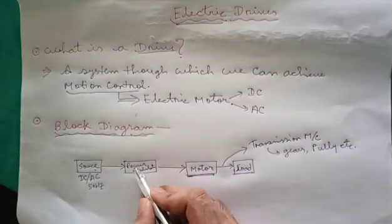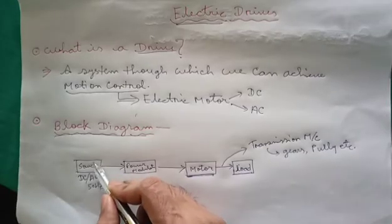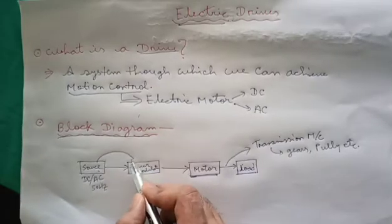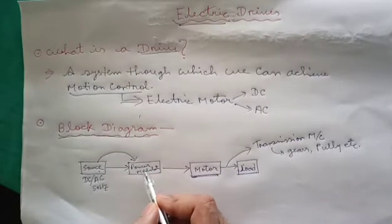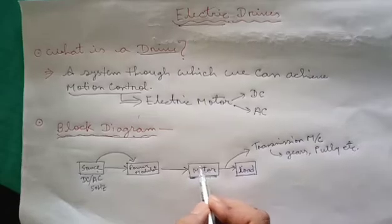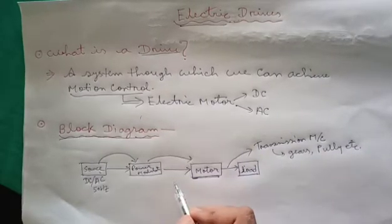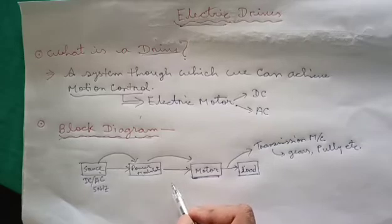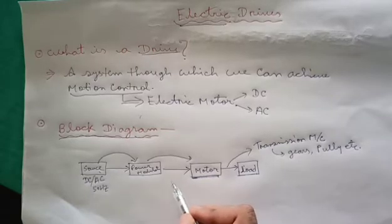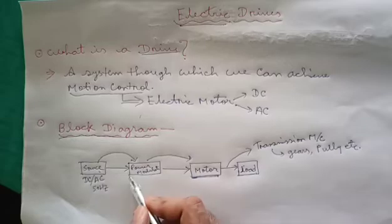This power modulator will take the supply from the source which is fixed and then modulate it according to the requirement of the load and give it to the motor. Suppose we are going in an electric vehicle and we want to change the speed of the car. The change of the speed of the car is done by this power modulator.